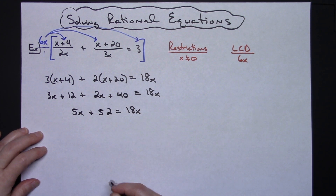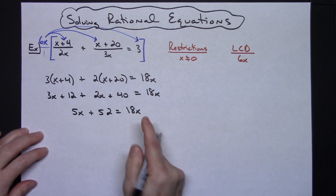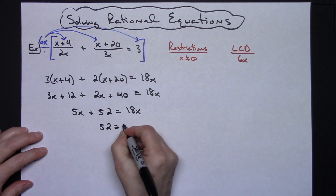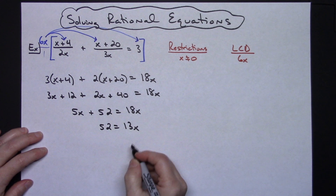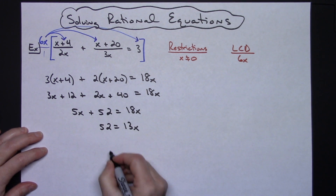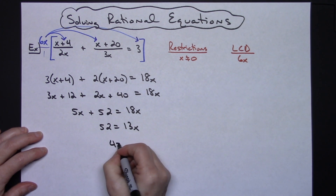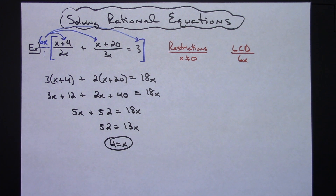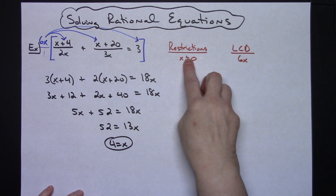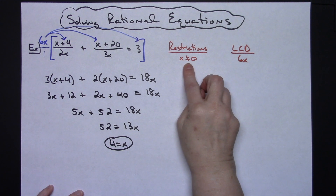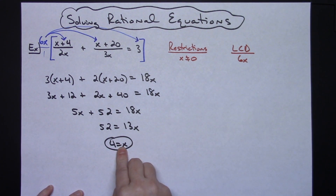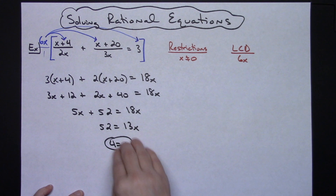Subtracting 5x from both sides gives 52 equals 13x. Dividing both sides by 13 gives x equals 4. Now, this does not violate my restriction since x equals 4, not 0, so we're good there.